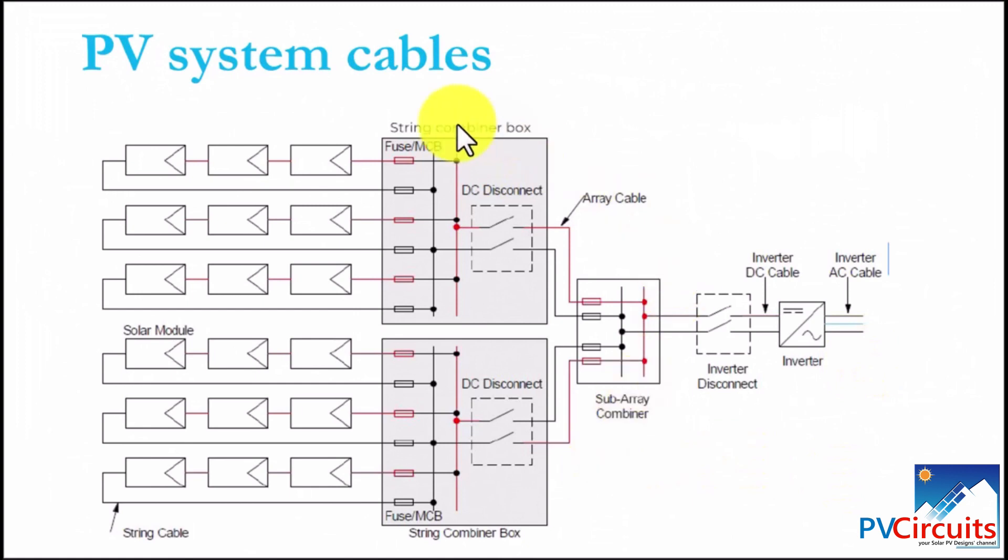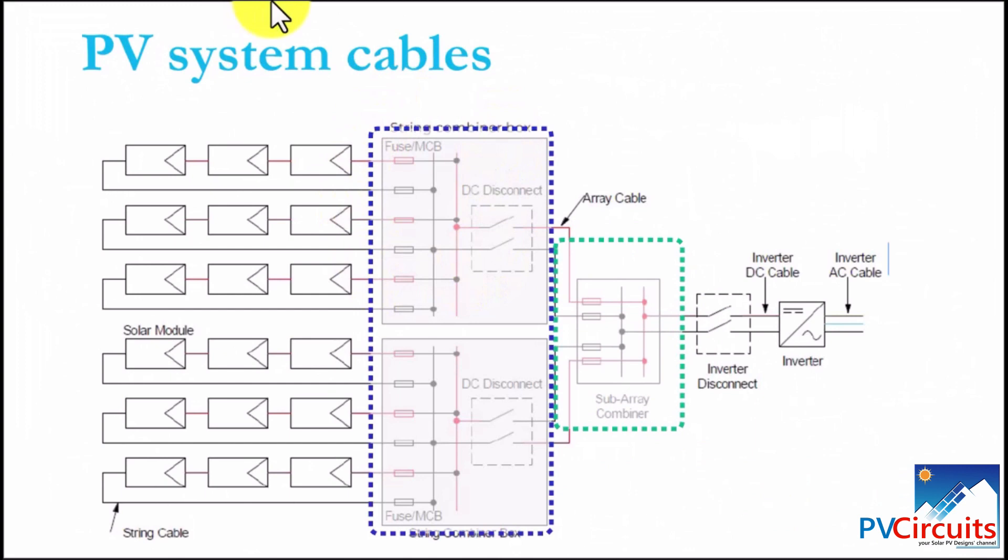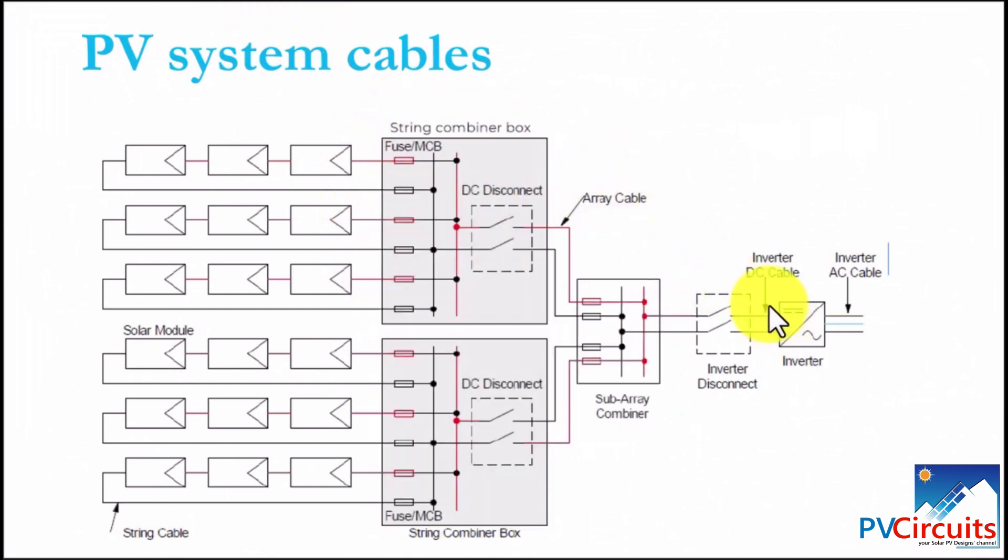Looking at this arrangement, we can say depending on the type of inverter, the need for the sub array combiner can be eliminated by using an inverter with several MPPT inputs. In this case, we can have an inverter with six MPPTs. That will eliminate the need for this sub array combiner and the string combiner because now the MPPT cables will go directly to the string. That decision is normally made when you are selecting your inverter.